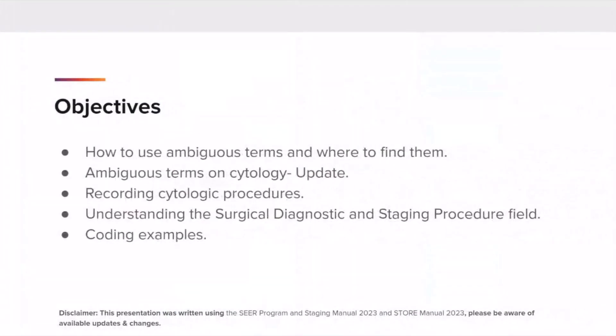The varying use of ambiguous terminology in a medical record can be a challenge while determining a diagnosis. The SEER and STORE manuals provide detailed guidelines on the best way to navigate these situations. The objectives for this presentation are to learn how to use ambiguous terms and where to find them, an update for reporting cytology that contains ambiguous terminology, understanding the nuances of cytologic procedures and how to code them, as well as reviewing some coding examples.